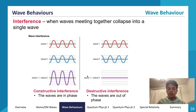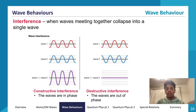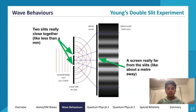Amplitude directly correlates to the loudness of sound, and frequency directly correlates to pitch. These are wave properties from Year 11 Module 2.